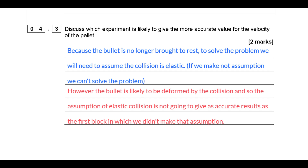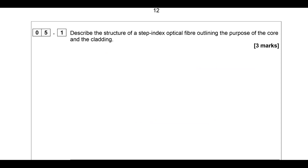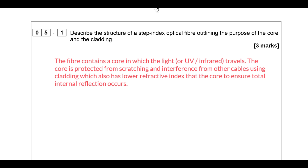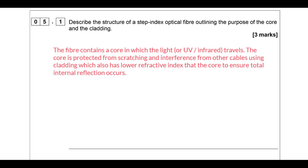Question five: describe the structure of a step-indexed optical fibre, explaining the purpose of the core and the cladding. The core is where the light - sometimes ultraviolet, sometimes infrared - travels. The cladding is there to protect the core, and also has a lower refractive index to ensure that total internal reflection occurs so the light doesn't leave the core.